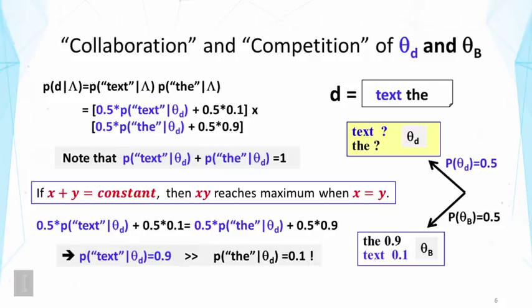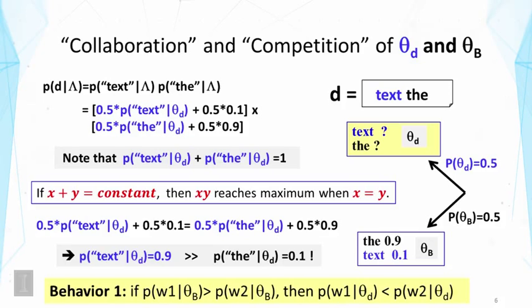the probability assigned by theta sub d must be higher for a word that has a smaller probability given by the background. And this is obvious from examining this equation because the background part is weak for text. It's small. So in order to compensate for that, we must make the probability of text given by theta sub d somewhat larger so that the two sides can be balanced.